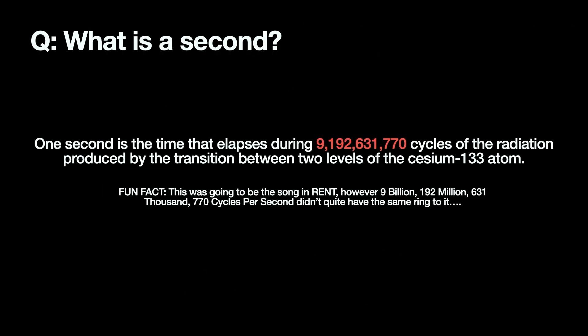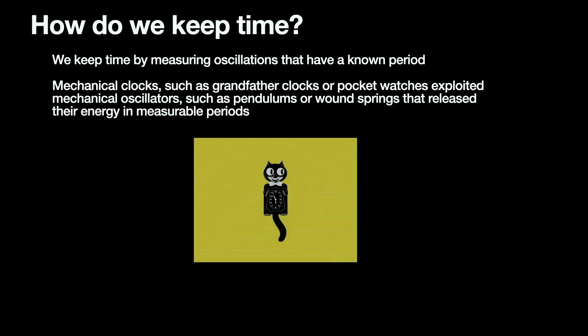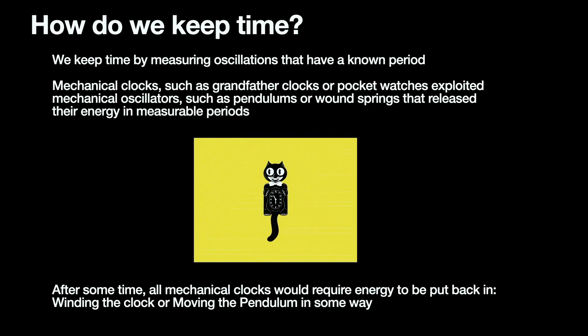We're going to talk about what's a second. It's 9,192,631,770 cycles of the radiation produced by the transition between two levels of the cesium-133 atom. What's great about the metric system is they come up with believable scientific representations for phenomena that we came up with before we understood the science. So how do we actually keep track of those if we don't have cesium?